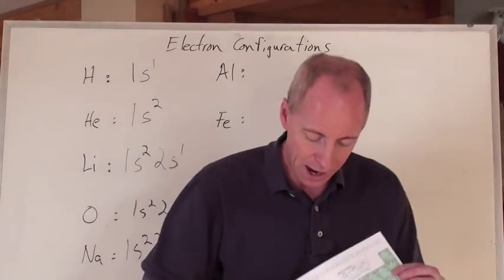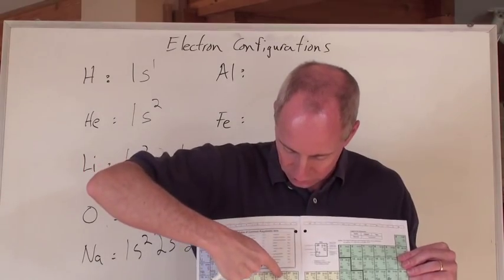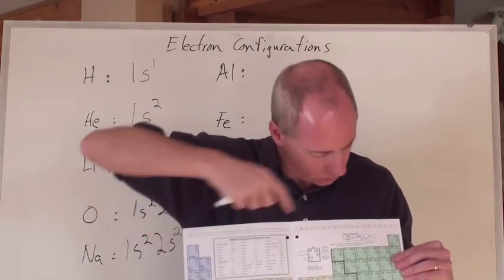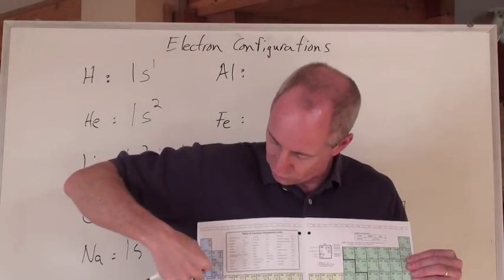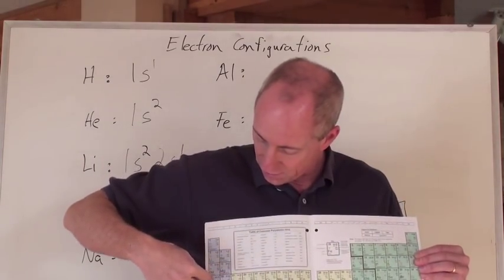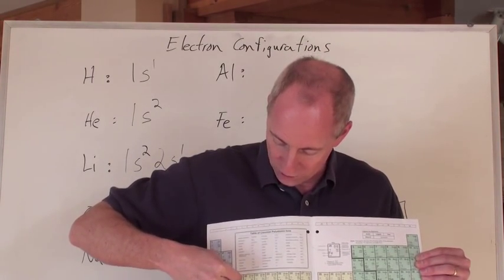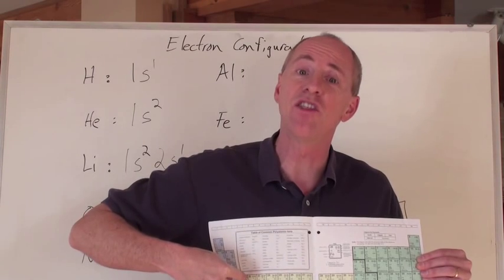What's iron? Iron is going to be right here in the periodic table, element number 26, 1s2, 2s2, 2p6, 3s2, 3p6. Hey, 4s2 actually comes before, this is not 4d, it's 3d.